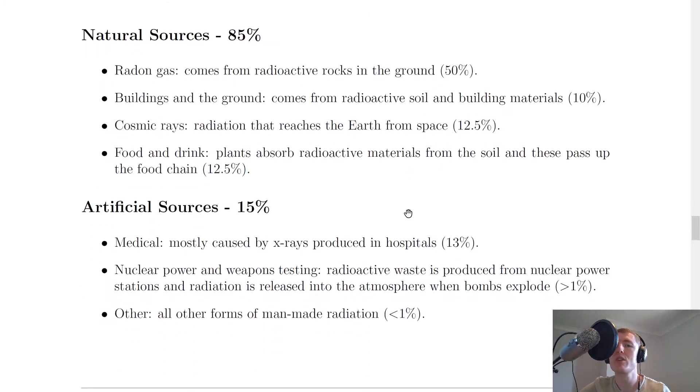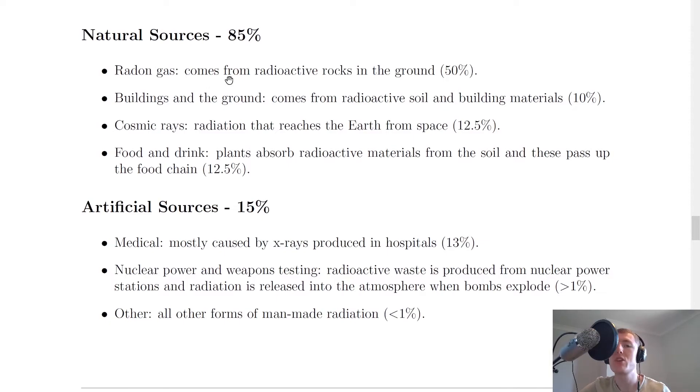So for natural sources, first of all, we have radon gas, which comes from radioactive rocks in the ground, and we saw that contributes 50% of overall background radiation. Buildings in the ground comes from radioactive soil and building materials, and this contributes about 10% to all background radiation. Cosmic rays is radiation that reaches the earth from space and this contributes about 12.5% of all background radiation.